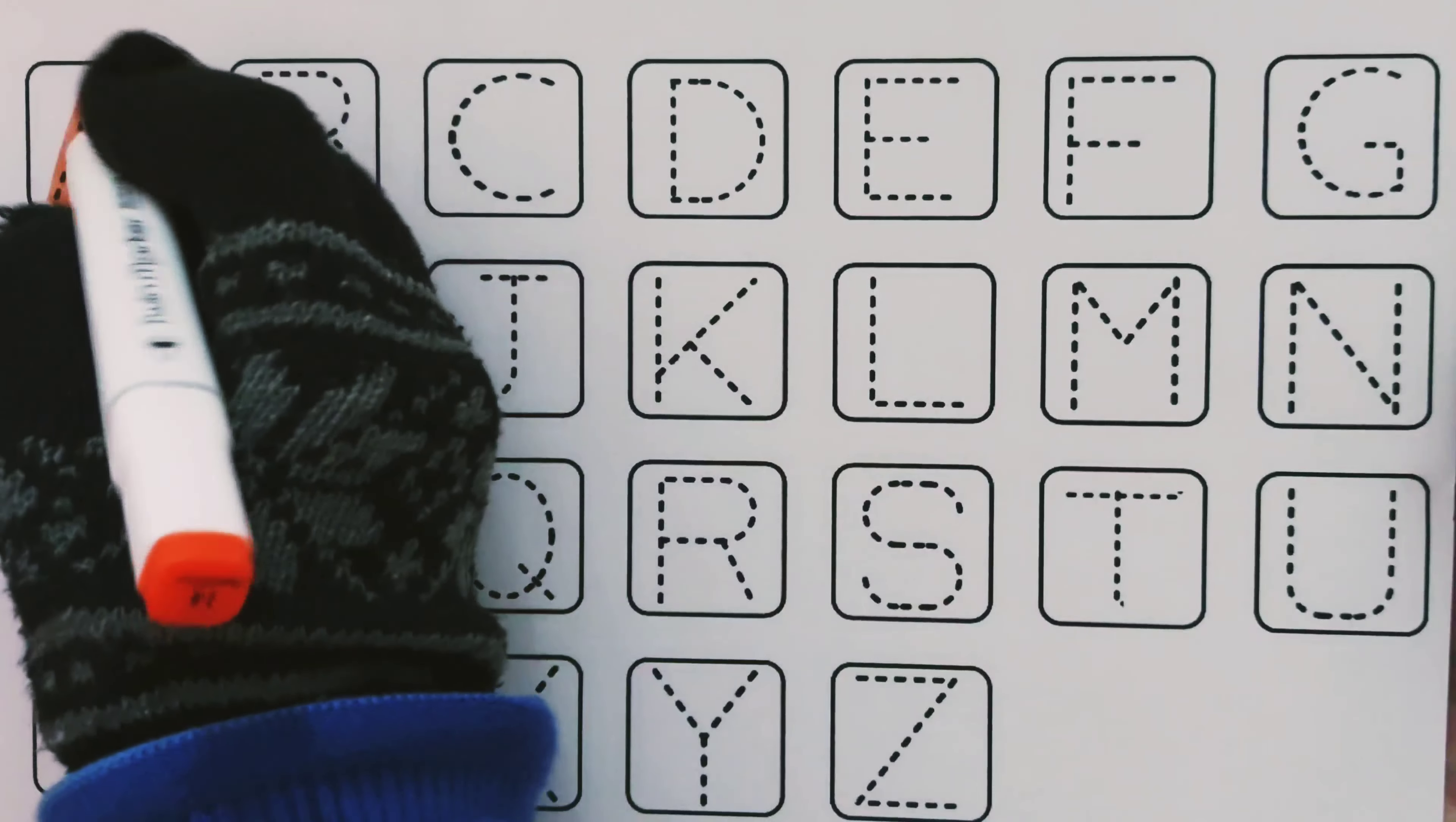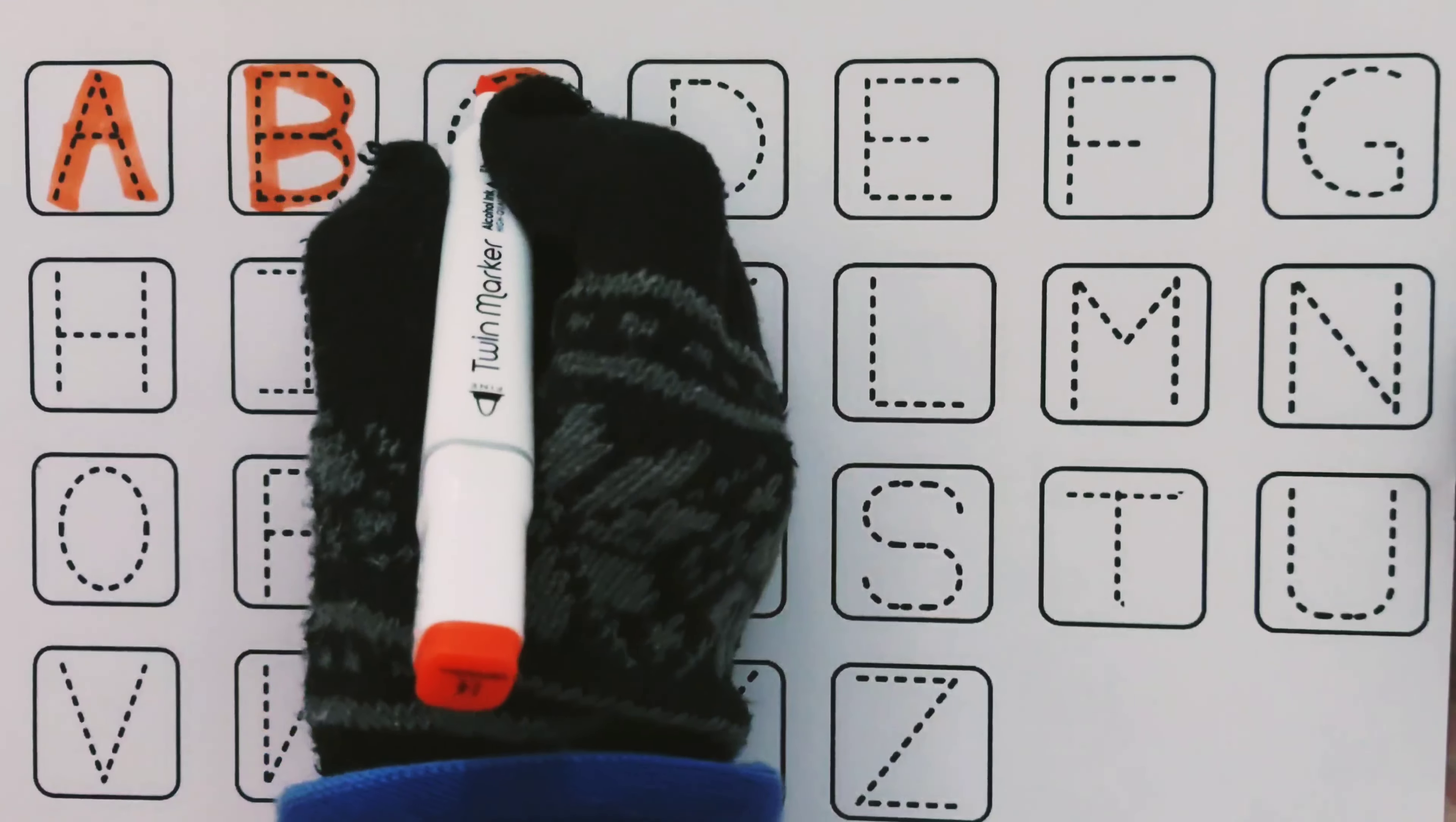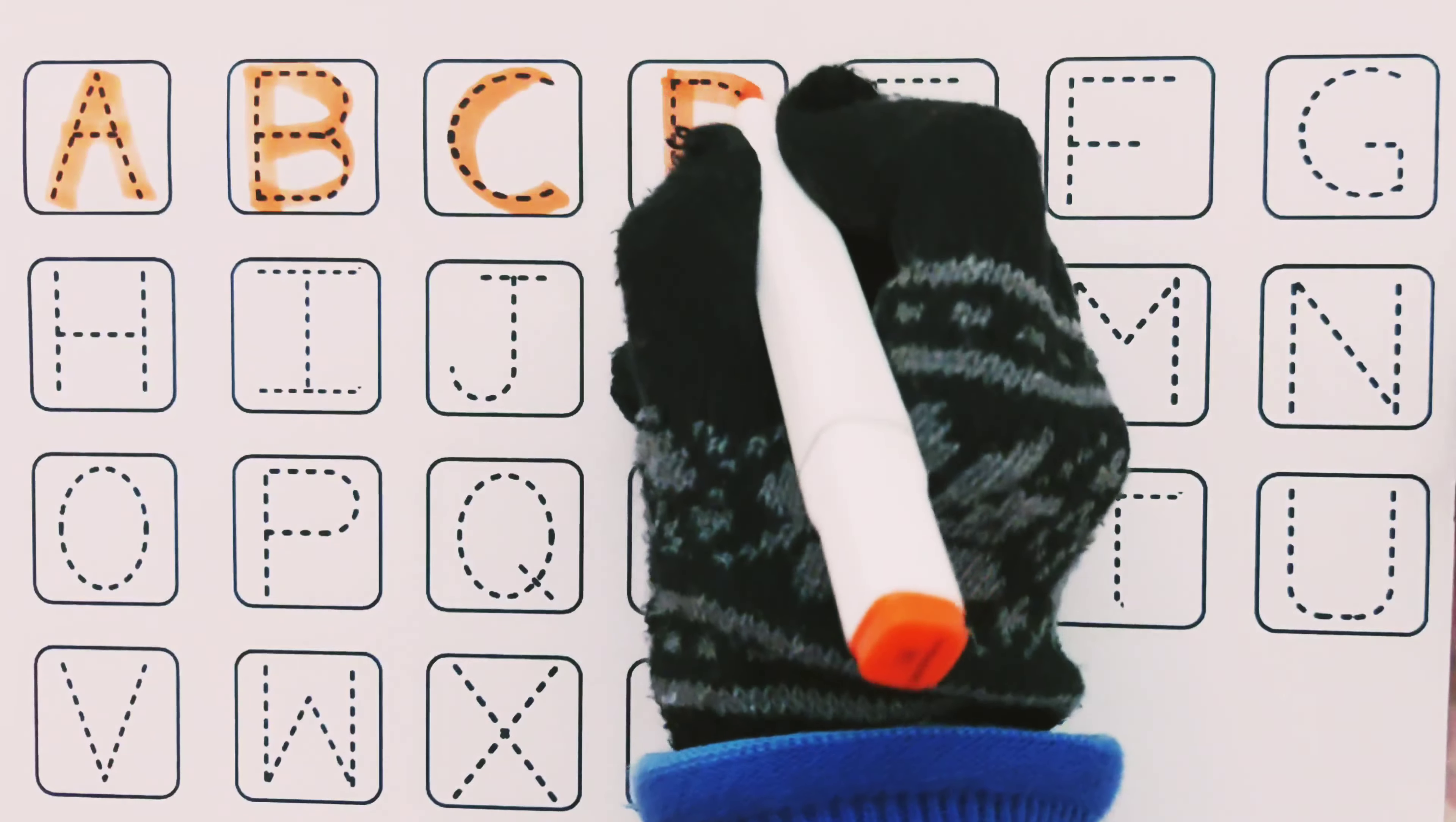This is A. A is for apple. This is B. B is for banana. This is C. C is for cat. D for door.